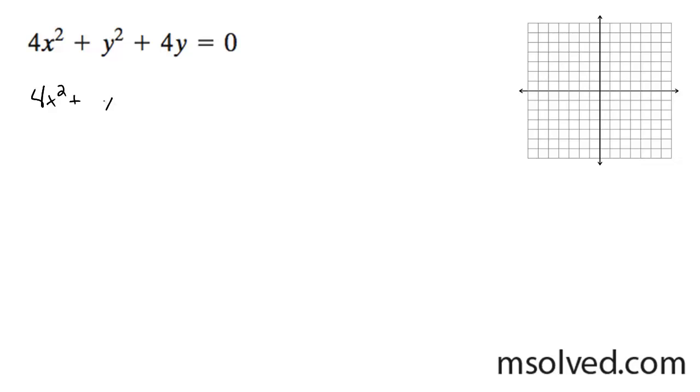So 4x squared plus y squared plus 4y, complete the square with regards to y here, so take half of this, square it, plus 4, balance the equation, because I'm going to add 4 over here.